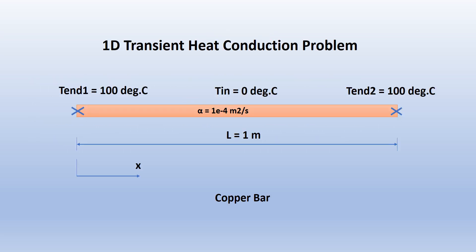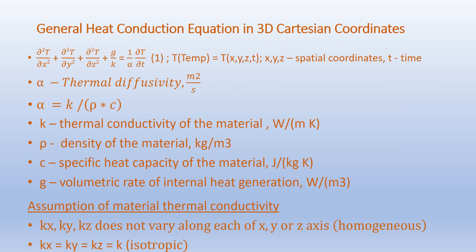We have a one-meter long copper bar. One end of the bar is kept at 100 degrees Celsius for all times, and the other end is also kept at 100 degrees Celsius for all times. The initial temperature of the bar is 0 degrees Celsius. Alpha is the thermal diffusivity of the material and is given as 1e-4 meters squared per second.